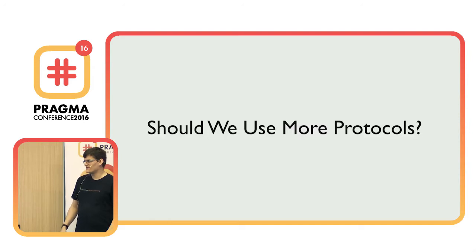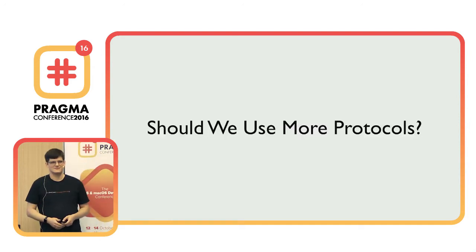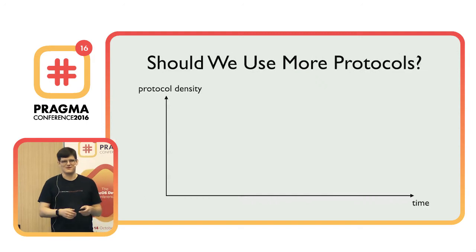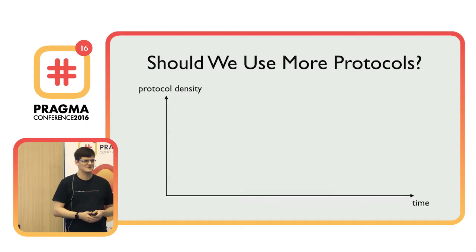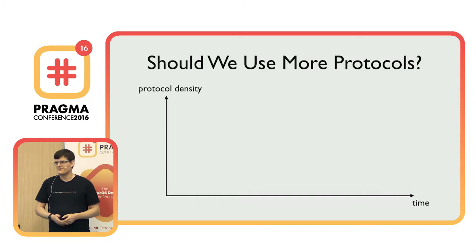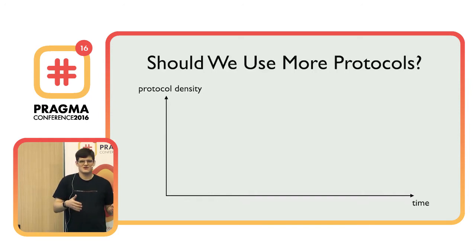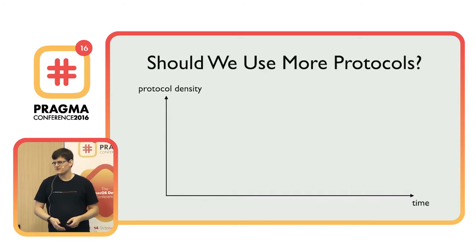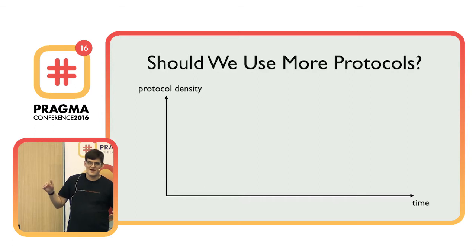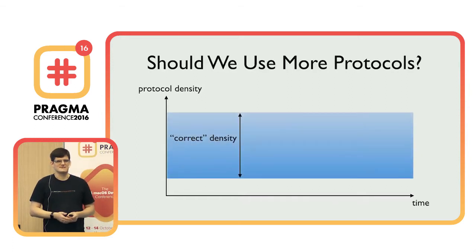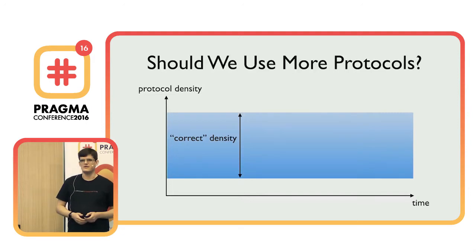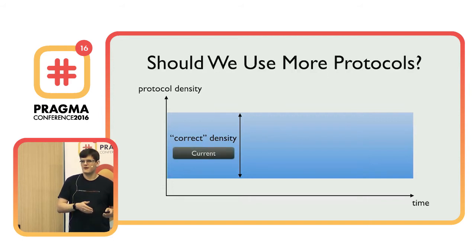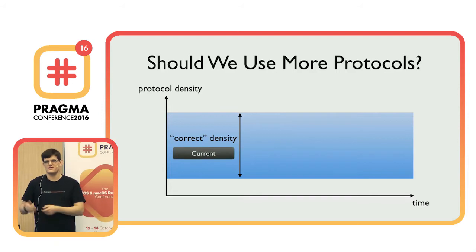To find that out, let's do an experiment. Let's start with a graph where the x-axis is time and the y-axis is protocol density. There are no hard limits — no absolutely right or wrong. There's kind of an area where the protocol density is about right. Let's assume we are somewhere there, and now we want to find out how few are too few and how many are too many.